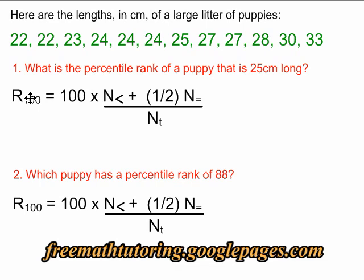R100 is the percentile rank, and that is our unknown this time. N less than is the number of puppies that are less than 25 centimeters long. N equals is the number of puppies that are exactly 25 centimeters long. And NT stands for N total, and it is equal to the total number of puppies, which in this case is 12.